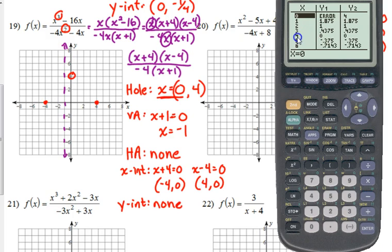We can see that at positive 4, the y-value is 0. At negative 4, the y-value is 0. At negative 1, we have an error in both of them. Remember, when the error shows up in both y1 and y2, that's when it's a vertical asymptote.